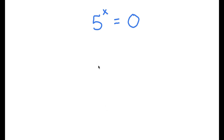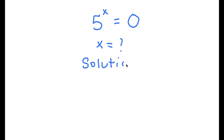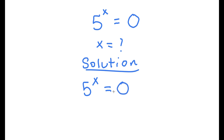So in this problem, I have 5 to the power of x is equal to 0. I want to find the value of x. For my solution, I first start with 5 to the power of x is equal to 0.